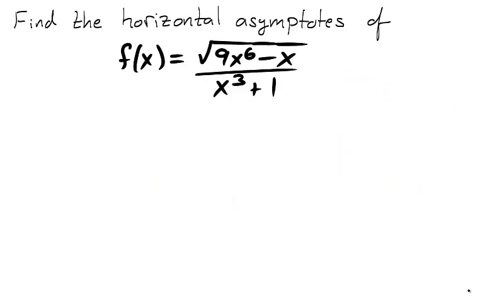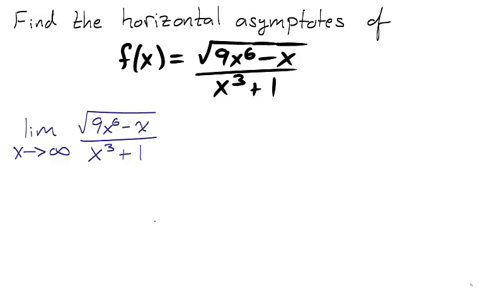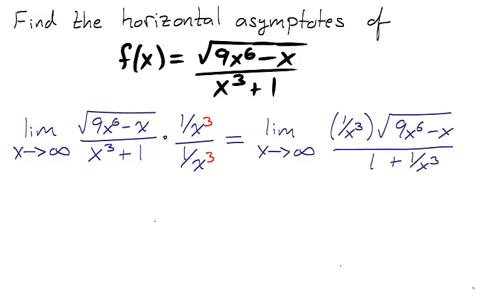This observation will be critical in finding the horizontal asymptotes of the function f. To find the horizontal asymptotes, we must find the limit as x approaches positive and negative infinity. We begin with positive infinity. Multiply the numerator and denominator by 1 over x cubed, the degree of the polynomial in the denominator. We can distribute through the denominator by 1 over x cubed, and with our observation that the square root of x squared is the absolute value of x, and the fact that x is approaching infinity, the square root of x squared is equal to x.